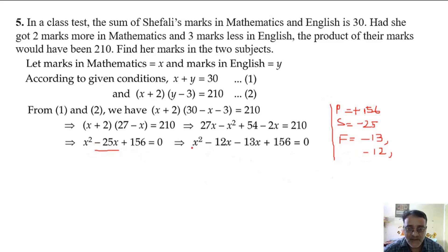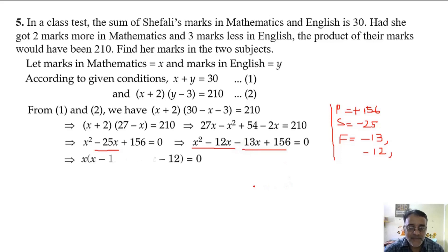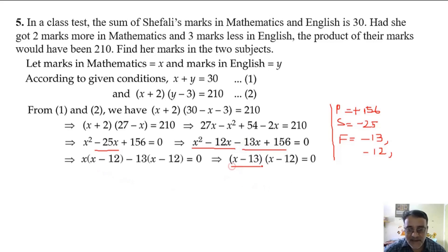So we split minus 25x as minus 12x minus 13x. Taking common factors from each group, we finally get two factors: (x - 13)(x - 12) equals zero.